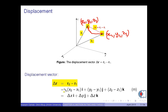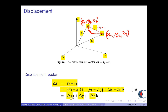In unit vector notation, delta r equals (x2 minus x1) i plus (y2 minus y1) j plus (z2 minus z1) k. Alternatively, we denote displacements in each axis by delta x, delta y, and delta z. Therefore, delta r equals delta x i plus delta y j plus delta z k.